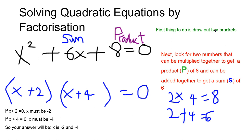First thing is to draw out two brackets like this. You draw the first bracket and then the second bracket. Next, look for two numbers that can be multiplied together to get a product of 8, and can be added together to get a sum of 6.